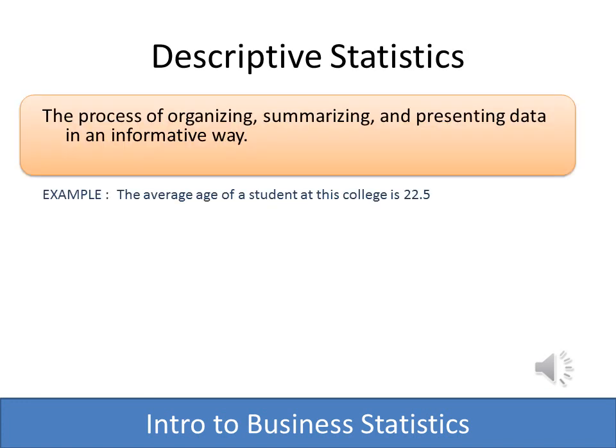Let's define descriptive statistics and inferential statistics in a bit more detail. Descriptive stats is the process of organizing, summarizing, and presenting the data in an informative way. An example might be: the average age of a student at this college is 22.5, or as we saw in the previous slide, things that include the mean, the mode, and that sort of thing.